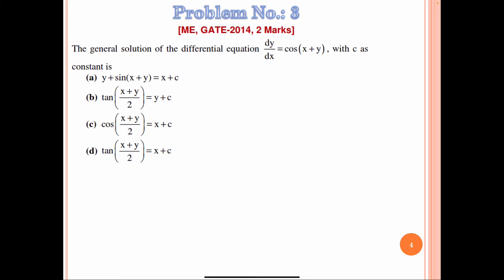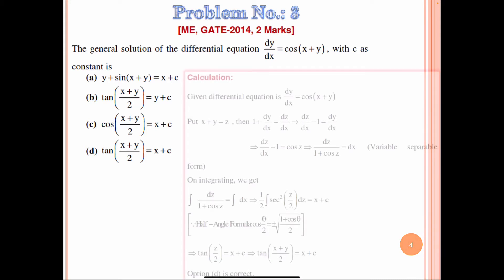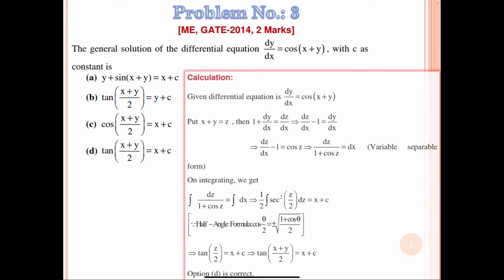Now question number 3. This question was asked in Mechanical Engineering GATE 2014 as a two-mark question. The general solution of the differential equation dy/dx = cos(x + y), where c is a constant. We have four options. In this type of problem, put x + y = z, so that dy/dx = dz/dx − 1. Substituting, we obtain dz/dx − 1 = cos z.